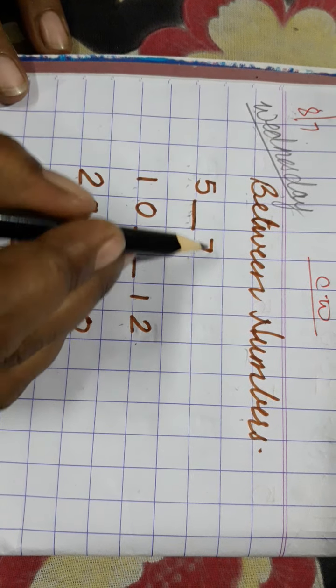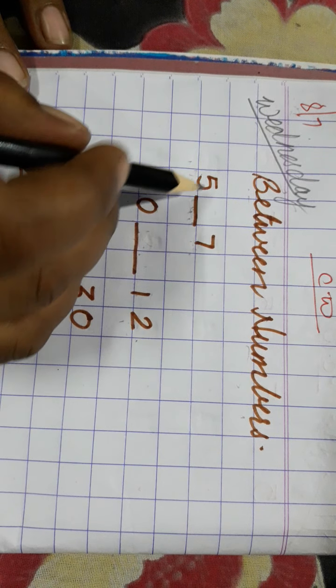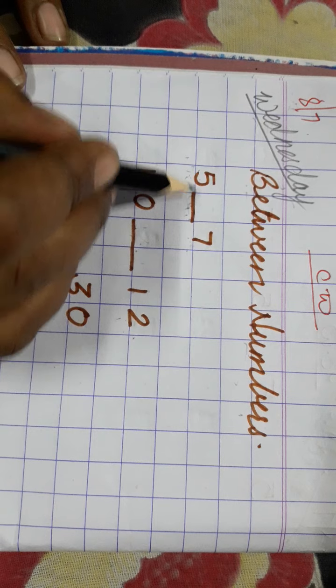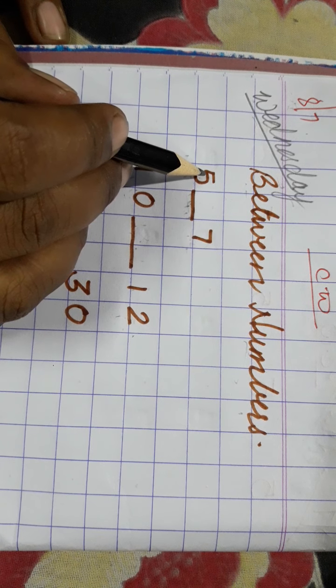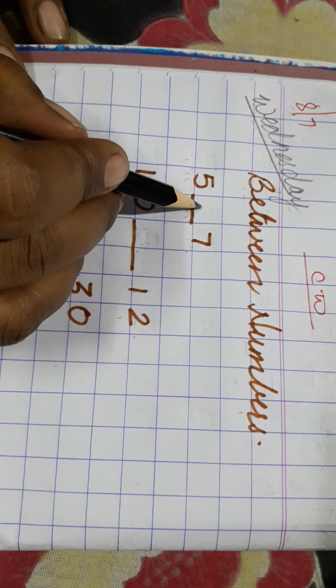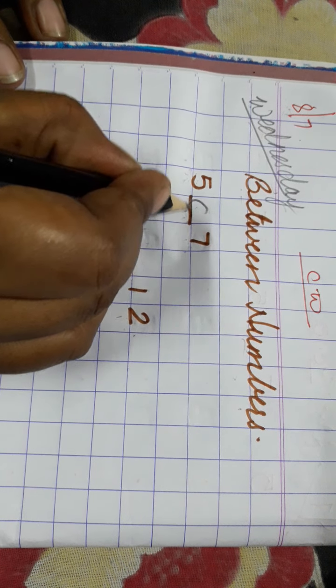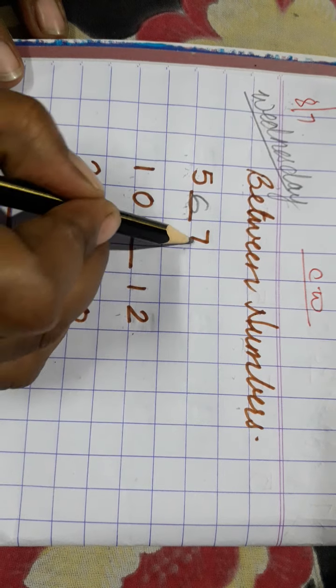This is one digit number, right? So, this is just like after number. What comes after 5? 6. And what comes before 7? 6. 5, 6, 7.